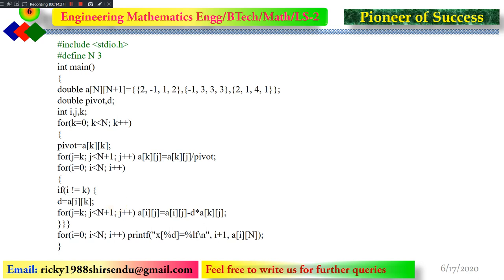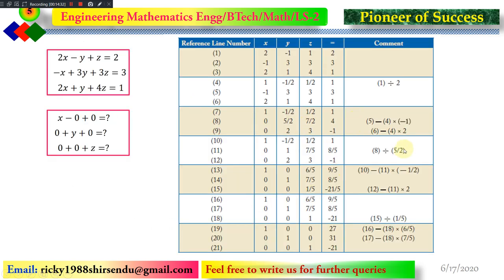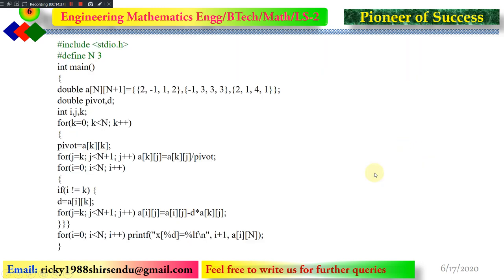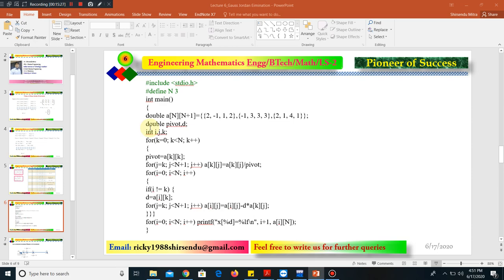This operation repeats three times (i = 0, 1, 2), mirroring the three manual elimination steps. The code first makes the pivot element 1, then zeros out the off-diagonal elements. After all operations are complete, it prints the solution variables. I encourage you to write this code yourself, trace through it, and add comments to understand each loop's purpose. If you have any queries, please write them in the comment box.